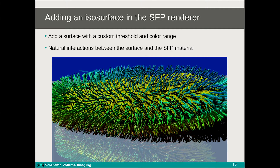A new feature in Huygens 19.10 is the ability to add an ISO surface to the SFP scene. The surface affects the SFP simulation and the SFP simulation affects the surface, leading to a natural-looking interaction. The surfaces cast a hard shadow on the table and the SFP material below it, while the SFP material partially obscures the surface and casts shadows on it. By using surfaces in the SFP scene, specific features of the objects can be accentuated.